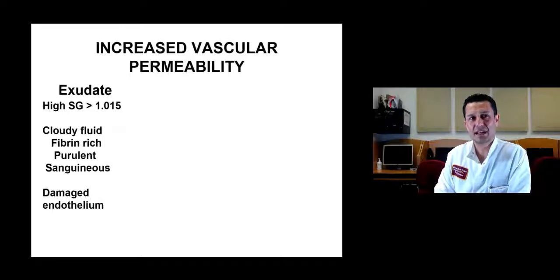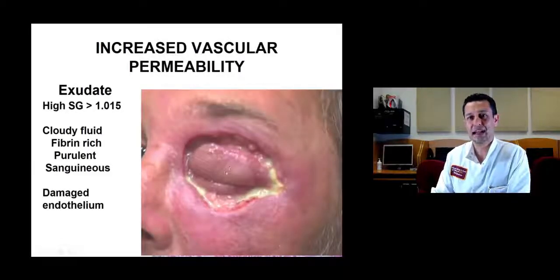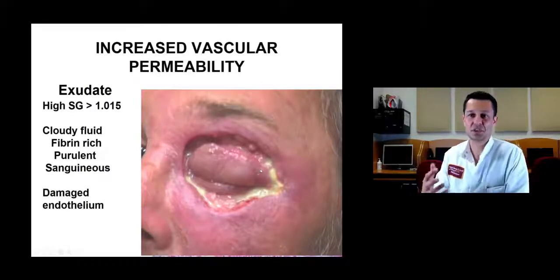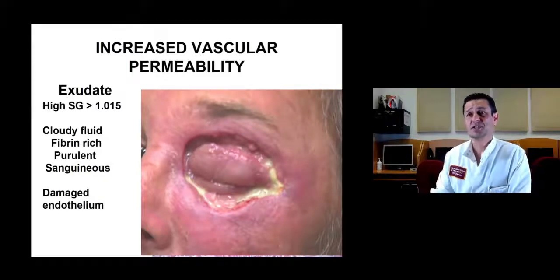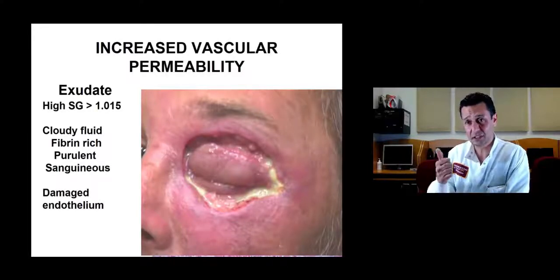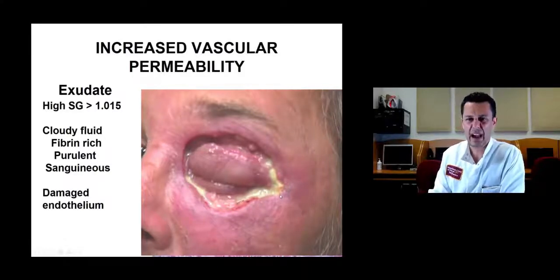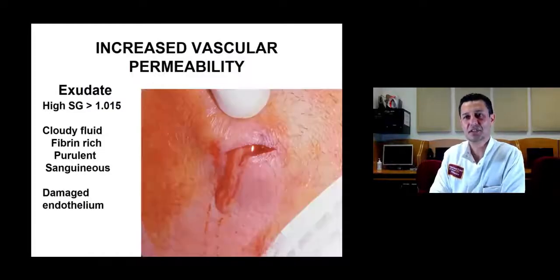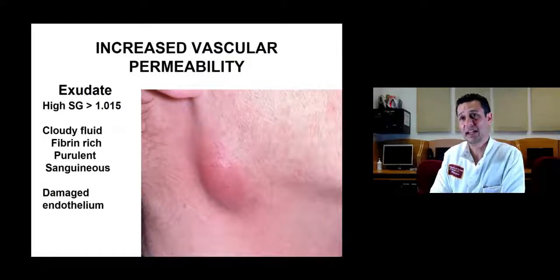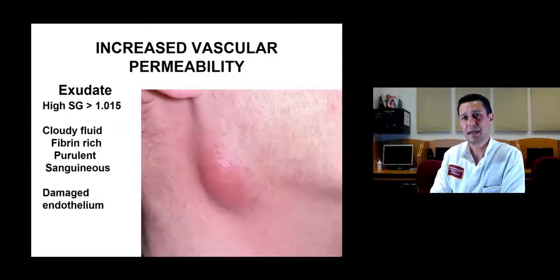Exudate has high specific gravity over 1.015 — it's dense, cloudy, rich, fibrous, and purulent. Here's a patient who had a severe eye infection leading to exenteration — losing the eye, surrounding structures, and vision, with a prosthetic eye placed. This is a great example of pus and exudate. Here's another example from an odontogenic infection at the angle of the mandible — red, swollen, painful, warm to touch. When incised, blood and pus come out — exudate — highly suggestive of bacterial infection.